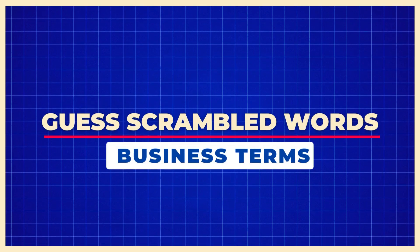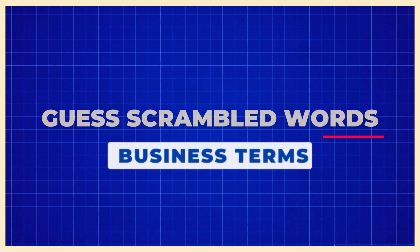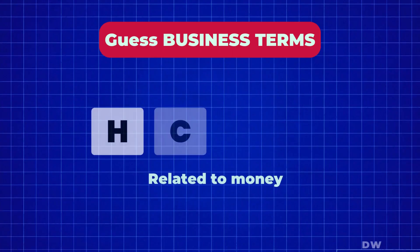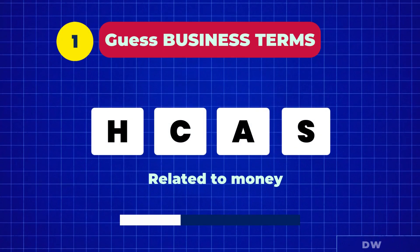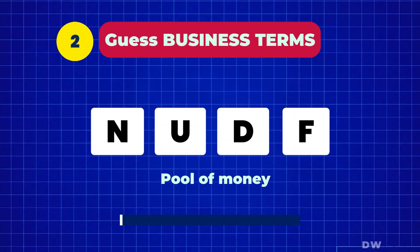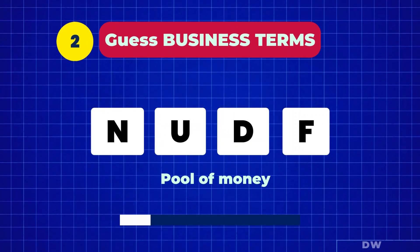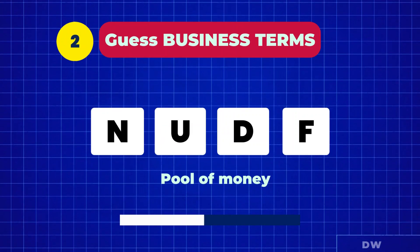Guess the business terms from their scrambled forms. Are you ready? Let's go! The first term is related to money — yes, it was cash. The second one: the hint is pool of money.